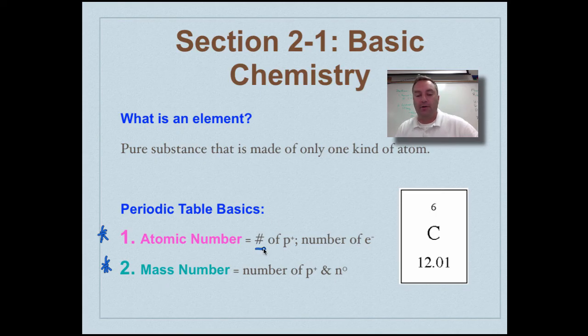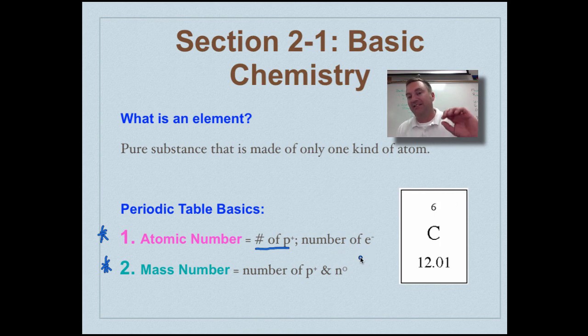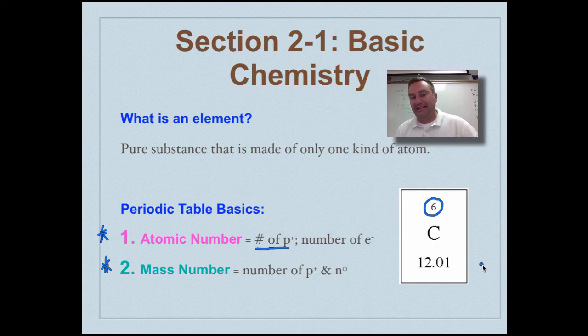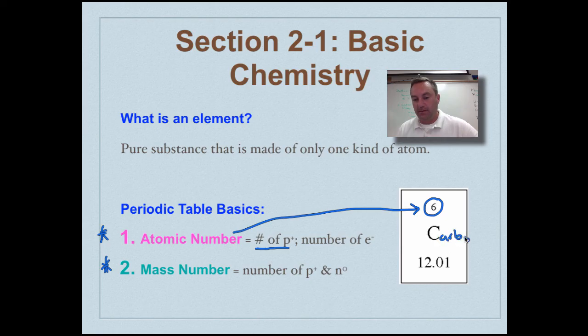We need to know the difference between the atomic number and the mass number. The atomic number is the number of protons, and this is going to determine what element it is. And it also tells you the number of electrons if it's going to be neutral. If you look right over here, that six is the atomic number. That's the atomic number. So anything with an atomic number of six is going to be carbon.